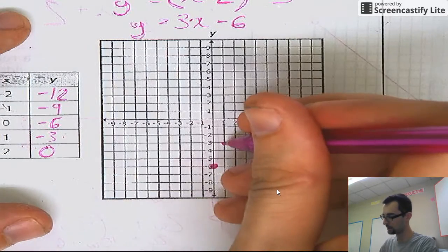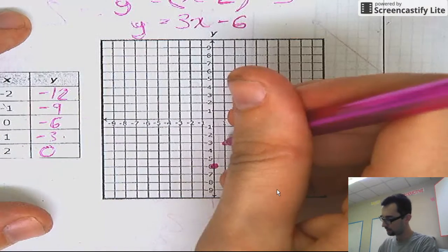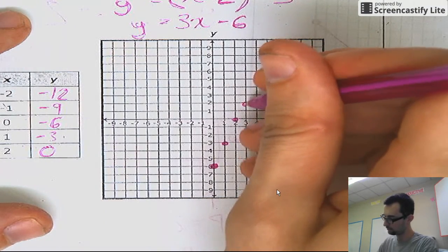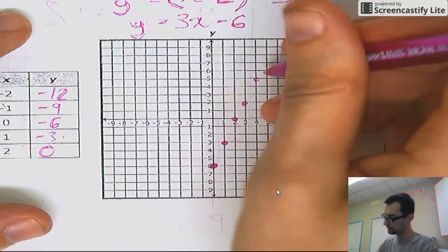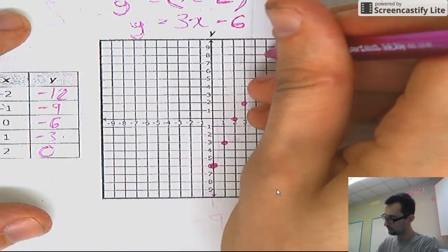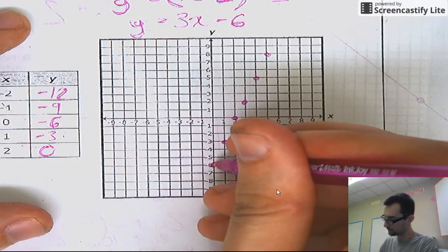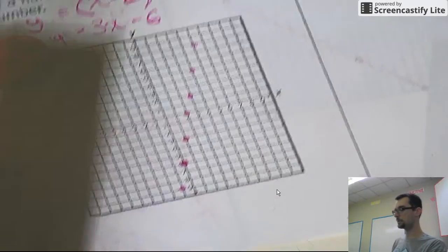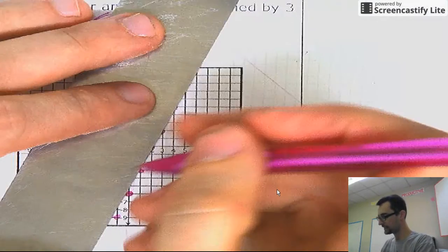Okay? This can sometimes be easier than plotting the points. Go up three, one, two, three, go over one. Go up three, one, two, three, go over one. Repeat as much as you want. You're going to end up with this nice. You can actually go down three and over one the other way. You're going to get this nice, beautiful, straight line.